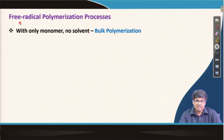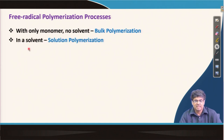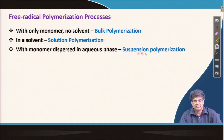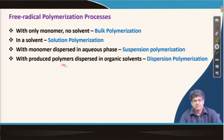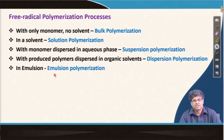Now I will talk about the common processes used for free radical polymerization. When only monomer is present with no solvent, we have bulk polymerization. In a solvent, we call it solution polymerization. When monomers are dispersed in an aqueous phase, we have suspension polymerization; when produced polymers are dispersed in organic solvent, we have dispersion polymerization; and we also have emulsion polymerization. I will discuss the advantages and disadvantages of these four processes briefly, then go into more detail on emulsion polymerization, as it is one of the most important industrial processes for making polymers by free radical polymerization.